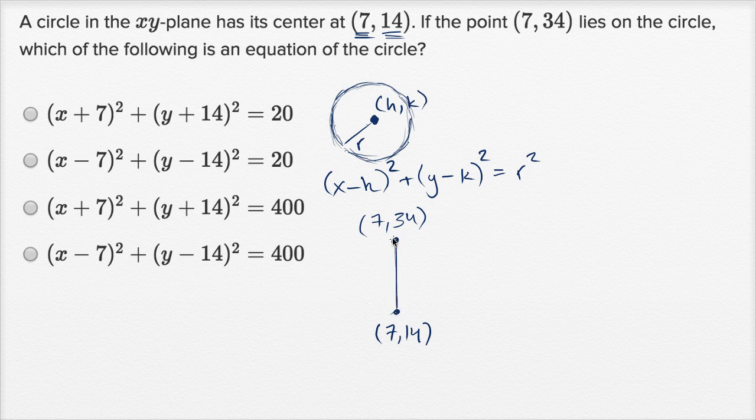So 7 comma 14 is the center. This point right over here, 7 comma 34, lies on the circle, so the circle's gonna look something like this. And so the radius of this circle, what we have to figure out, is just the distance between these two points.